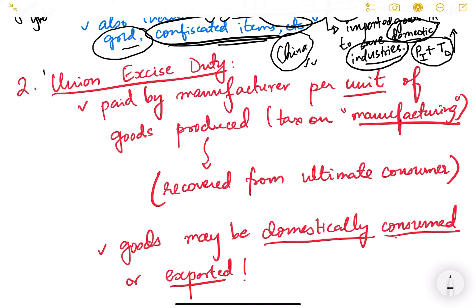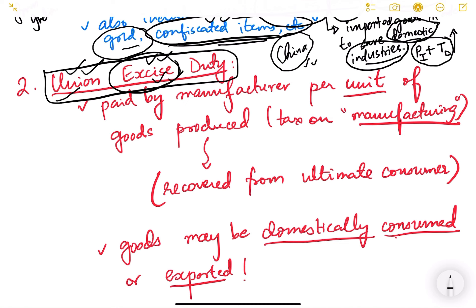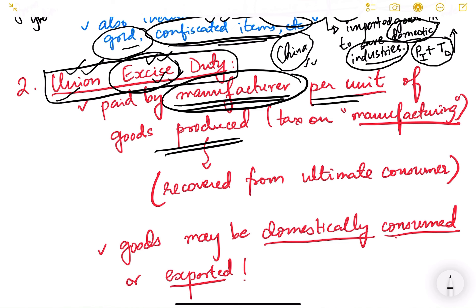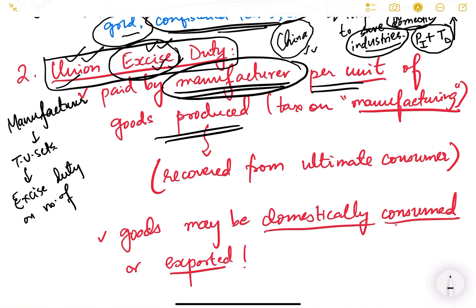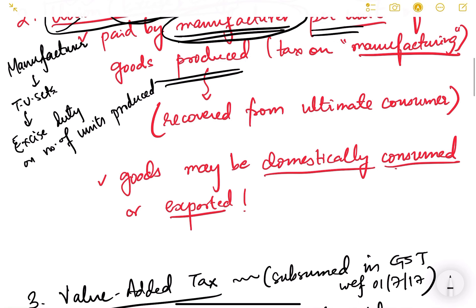The next type of indirect tax is the union excise duty. Union means central government. Excise duty is a tax imposed on manufacturing — it is paid by the manufacturer and it is per unit of production. So if a manufacturer is producing TV sets, he will pay excise duty on the number of units produced. This duty is not fixed; it depends on the number of units.